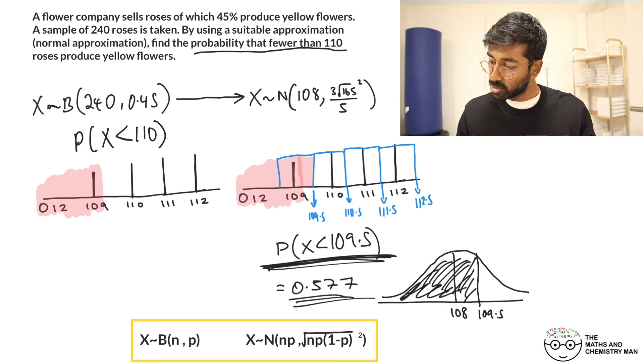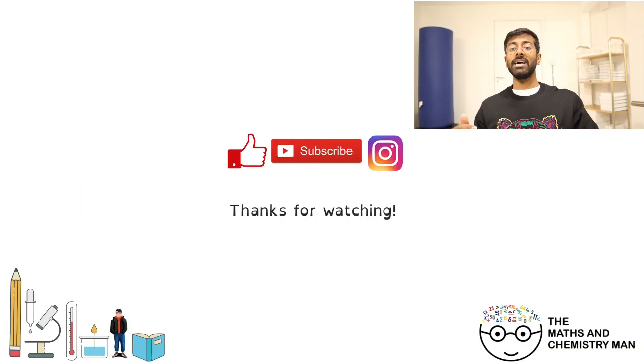And there we go. So that is how we would approximate your binomial to a normal distribution. Hopefully you've got that correct. If not, hopefully you know how to get it correct. Always start by laying out those distributions, have the binomial then change it into the normal by using those little formulas I showed you in the yellow box. So more coming your way really, really soon. Stay tuned and I'll catch you in another video real soon.